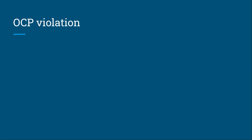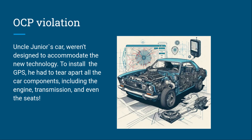Let's look at a simple example of an OCP violation. Uncle Junior's car was not designed to accommodate new technology. To install a GPS, he had to tear apart all the car components, including the engine, transmission, and even the seats. We have a simple technology to install, but we have to tear down everything already in place just to add it — a direct violation of OCP.